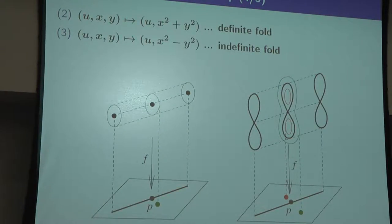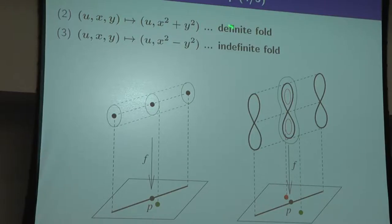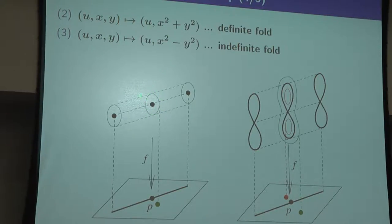Here is a picture of a definite fold. The u-direction is this direction, and x and y form the fiber. Choose a small interval transverse to the singular set and consider the fiber image. The preimage of a point P where the second entry equals zero is just one point. The preimage of the green point is a simple closed curve — one circle — so it corresponds to one point. On the other side, the preimage is empty, so we get a polyhedral shape with a cap — this is the definite fold.